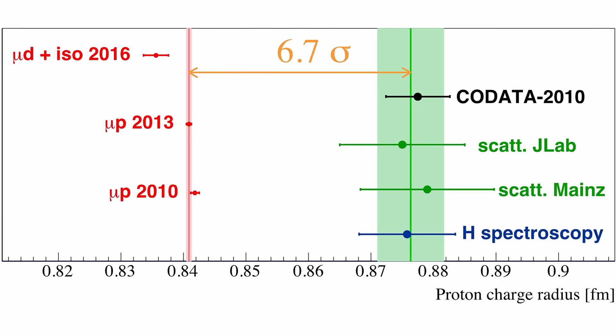At first, this seemed like an experimental anomaly, but repeated measurements confirmed the discrepancy. This raised serious questions. Had previous measurements overestimated the proton size? Was the muonic hydrogen result revealing some new physics? Or was something missing in our understanding of how charge is distributed inside the proton?